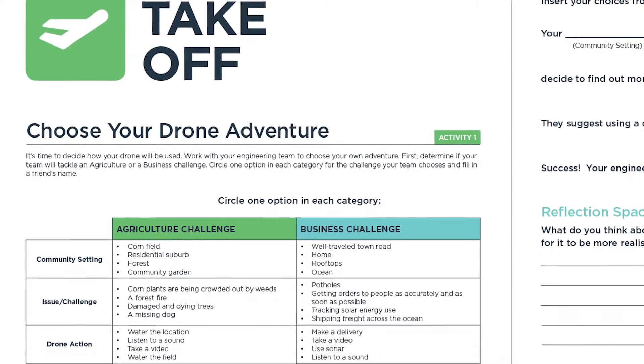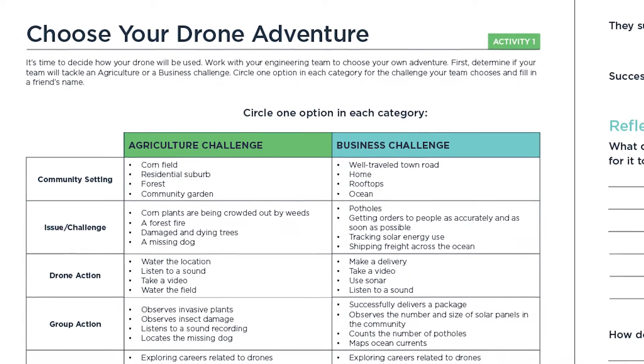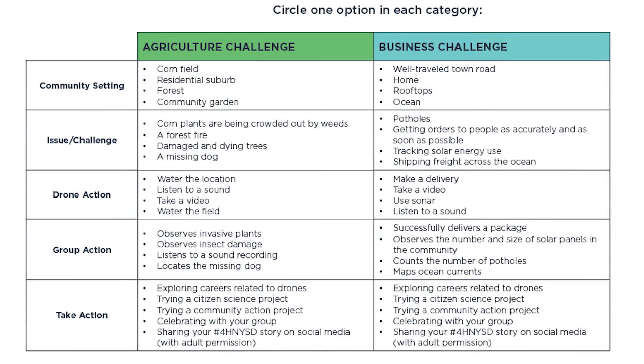Now it's time to choose your drone adventure. In this first activity, you will learn about real-life applications for drones and how they can solve community issues. First, determine if you will take on an agriculture or a business challenge. Think about your scenario and how you think a drone could help. What do you think success looks like in this scenario?